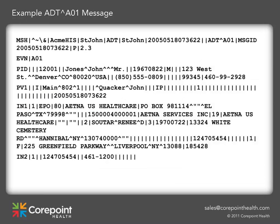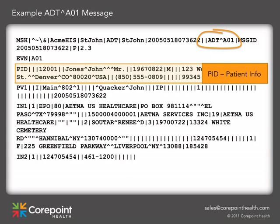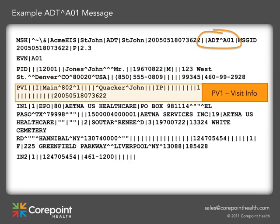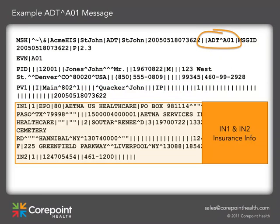Within the contents of an ADT message, you will find patient demographic and visit information. Here we're looking at a sample ADT A01 patient admit message. In the PID segment, you can find the patient's name and contact information. The PV1 segment holds visit information, such as the attending physician and the assigned patient location. The IN1 and IN2 segments are where you will find the patient's primary and secondary insurance information.